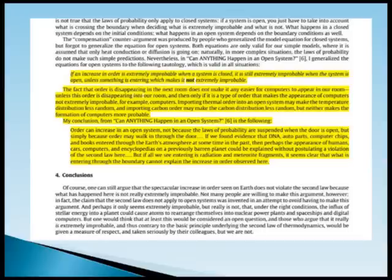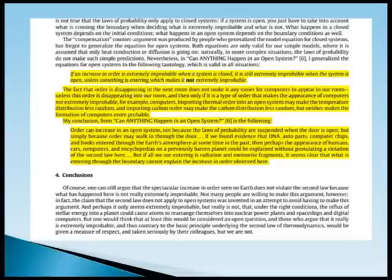Importing thermal order into an open system may make the temperature distribution less random, and importing carbon order may make the carbon distribution less random, but neither makes the formation of computers more probable. Thus, Dr. Sewell concluded, order can increase in an open system not because the laws of probability are suspended when the door is open, but simply because order may walk in through the door. If we found evidence that DNA, auto parts, computer chips, and books entered through the Earth's atmosphere at some time in the past, then perhaps the appearance of humans, cars, computers, and encyclopedias on a previously barren planet could be explained without postulating a violation of the Second Law here. But if all we see entering is radiation and meteorite fragments, it seems clear that what is entering through the boundary cannot explain the increase in order observed here.